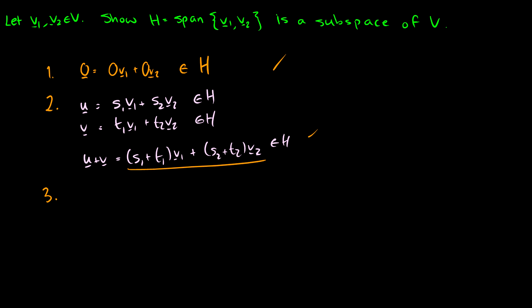For the third condition, we check that C times any vector is in the subspace for any scalar C. C times U equals C·S1·V1 plus C·S2·V2, and we know this is in the subspace because it is also in the span. Therefore all three conditions hold, so H = Span{V1, V2} is a subspace of V.